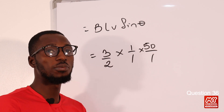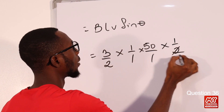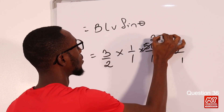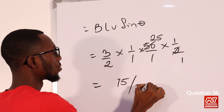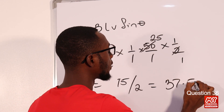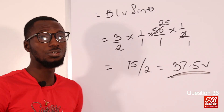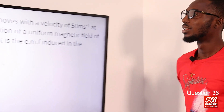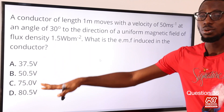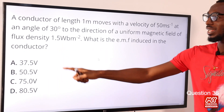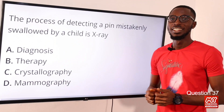Calculating: EMF = 1.5 × 1 × 50 × 0.5 = 1.5 × 25 = 37.5 volts. So the induced EMF is 37.5 volts. Looking through the options, this is found in option A. Option A is the correct option — 37.5 volts.